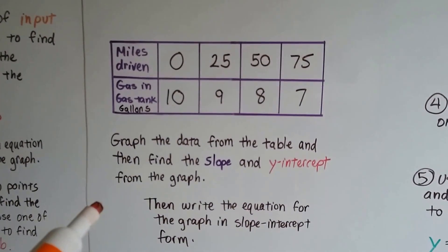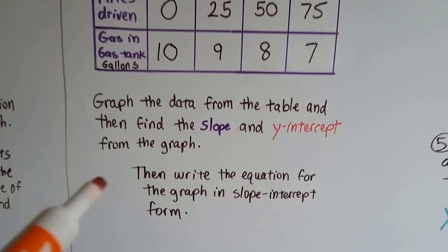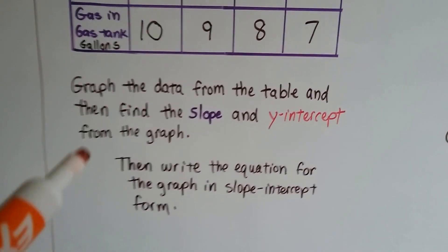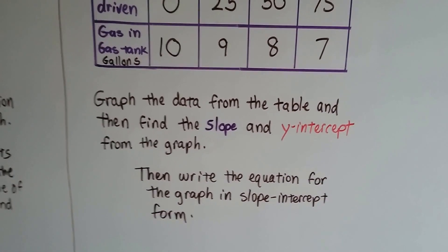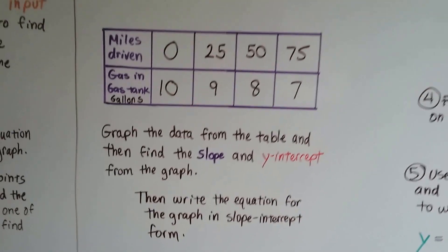We're going to graph the data from this table and find the slope and y-intercept from the graph. Then we're going to write an equation for the graph in slope-intercept form.